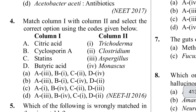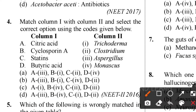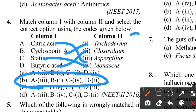Fourth question: match Column 1 and Column 2. Citric acid is produced by Aspergillus. Cyclosporine A is produced by Trichoderma. Statin is produced by Monascus. Butyric acid is produced by Clostridium. Citric acid - Aspergillus is correct; Cyclosporine A - Trichoderma is correct; Statin - Monascus, Butyric acid - Clostridium. Option B is the correct answer.